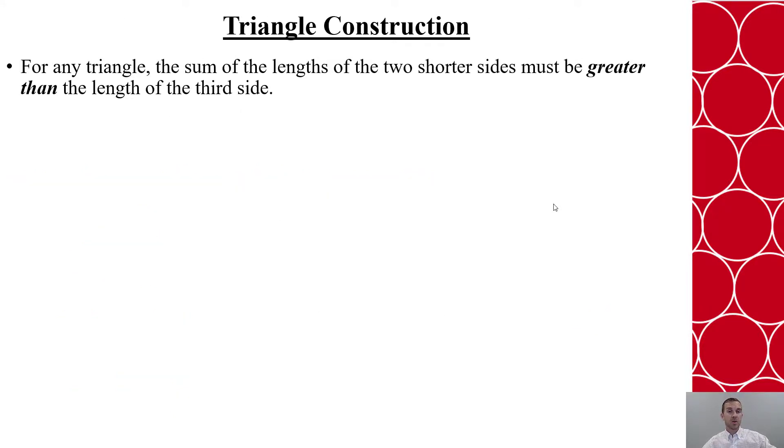Now just like we're talking about classifications, we also want to know can a triangle even be constructed if we're given specific lengths. And what we know is that the sum of the two shorter sides must always be greater than the third side's length if a triangle is to be constructed. And if it is constructed, we can even take it a step further to determine what type of triangle, but we're going to focus just on the idea of can a triangle be constructed.